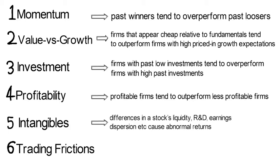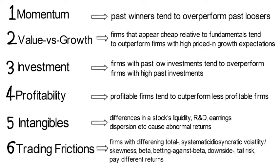Intangibles says that differences in a stock's liquidity, R&D, earnings dispersion, etc. cause abnormal returns. And trading frictions summarize findings that firms with differing total, systematic, or idiosyncratic volatility, skewness, beta — or betting against beta — downside risk, and tail risk, pay different returns.